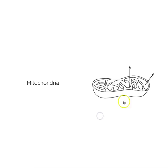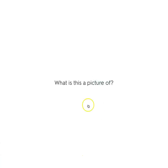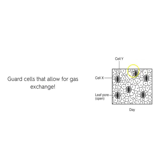What is this a picture of? This is a picture of the mitochondria — the arrow pointing outside shows it is making and producing ATP energy. What is this a picture of? This is a picture of cheek cells; the arrow is pointing to the nucleus in one particular cell.